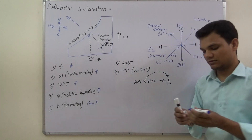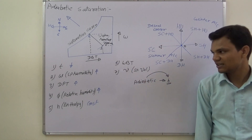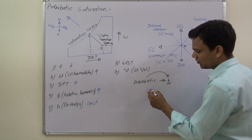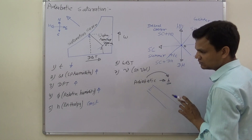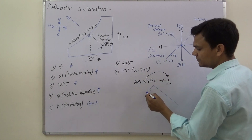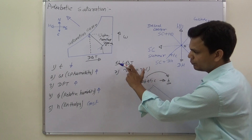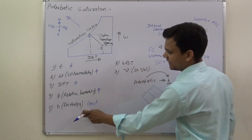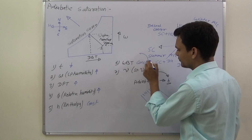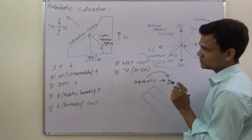Regarding wet bulb temperature: enthalpy lines and wet bulb temperature lines have the same degree of inclination on the psychrometric chart. So the effect on wet bulb temperature and enthalpy will remain the same — the wet bulb temperature will also remain constant.